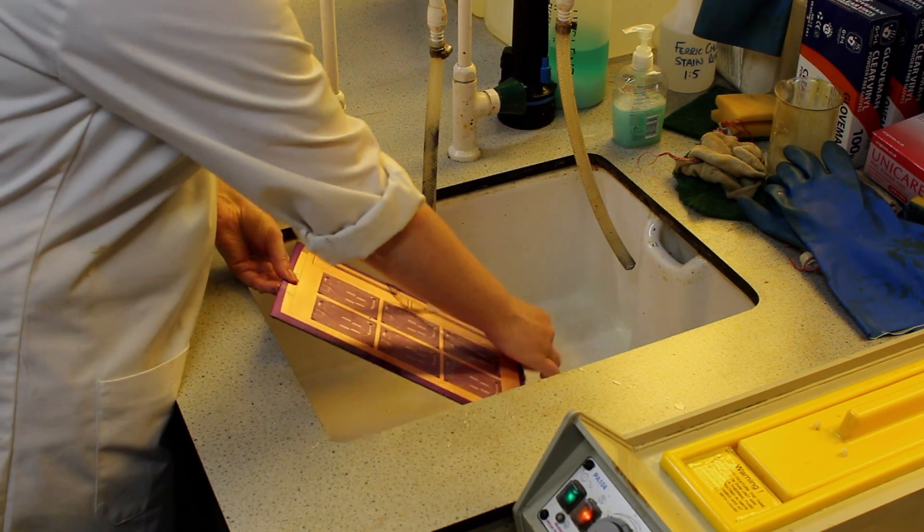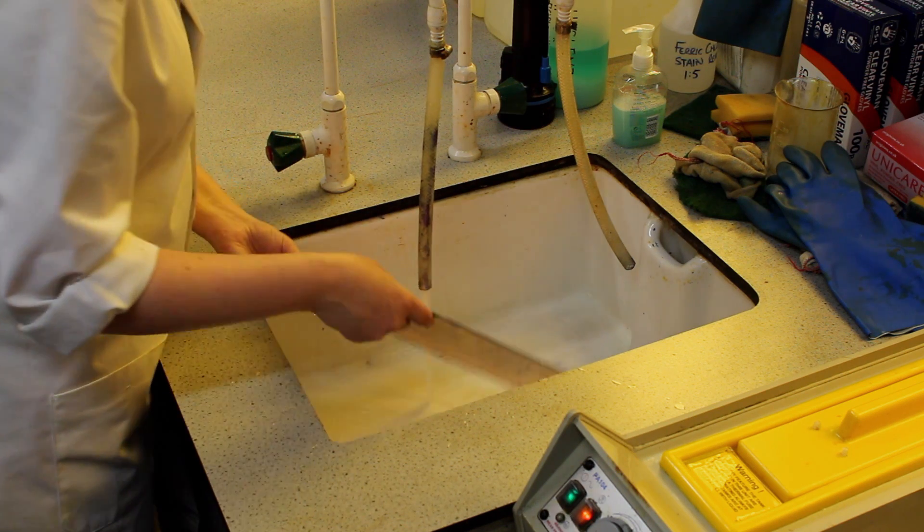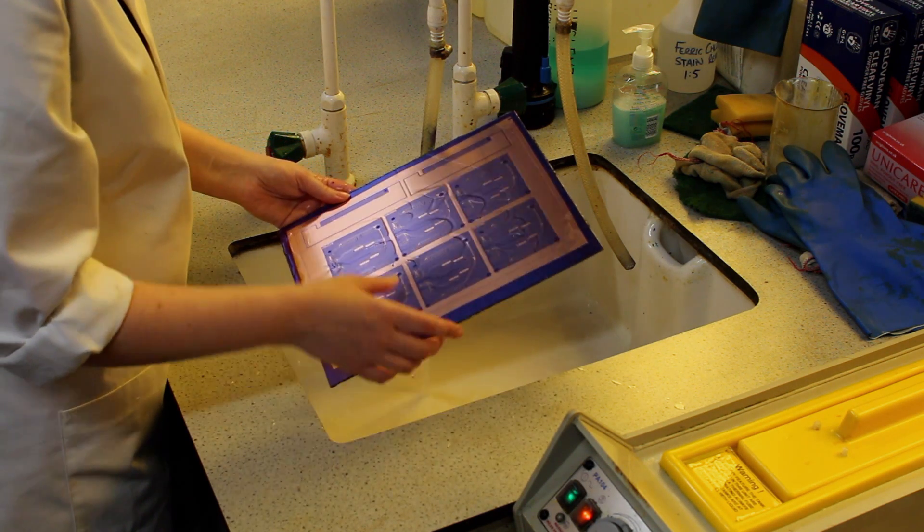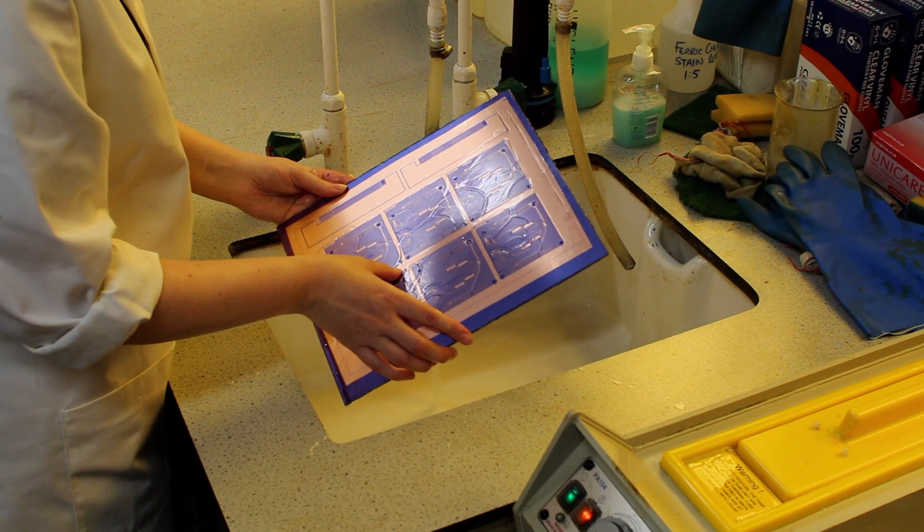It's then rinsed to wash away any remaining loose film. A visual check is done for any remaining resist film, broken tracks or other imperfections.